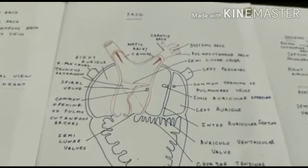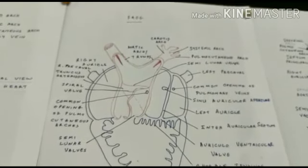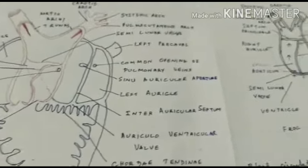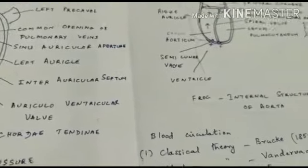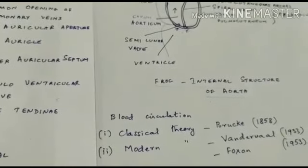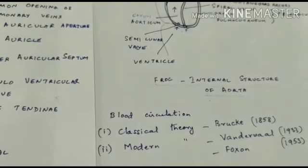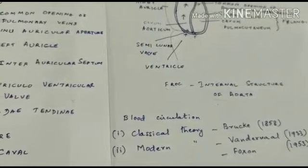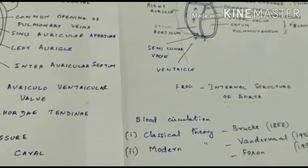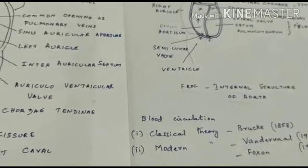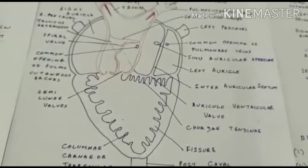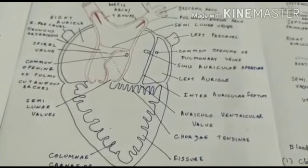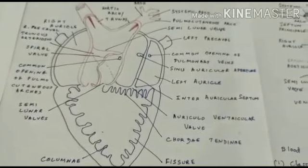This is the basis of the classical theory put forward by Brook in 1858, which believed in three types of blood: pure, impure, and mixed blood.